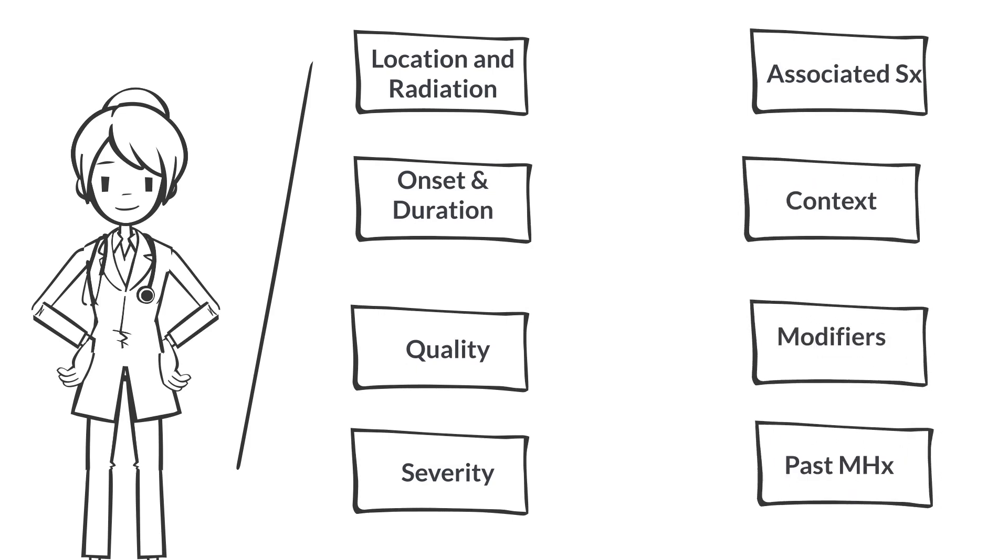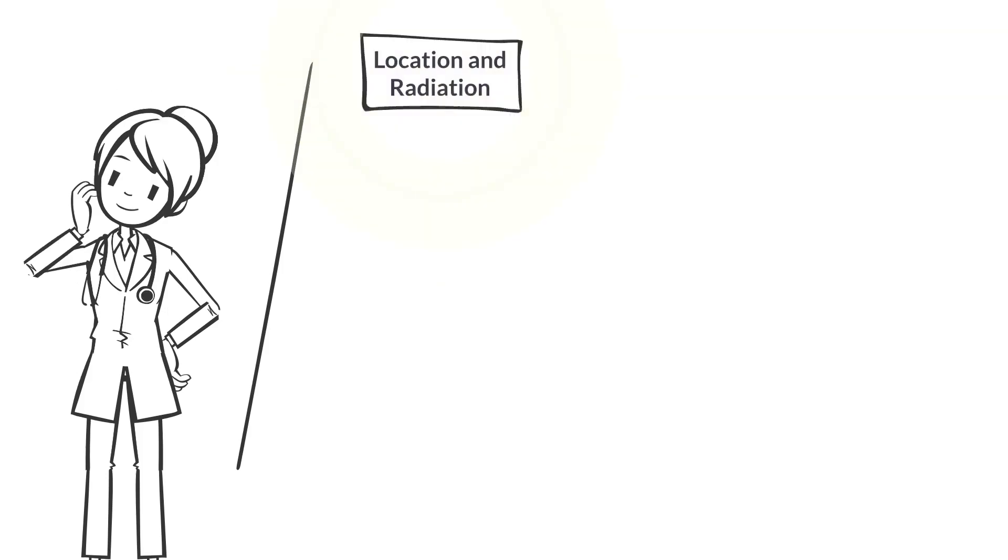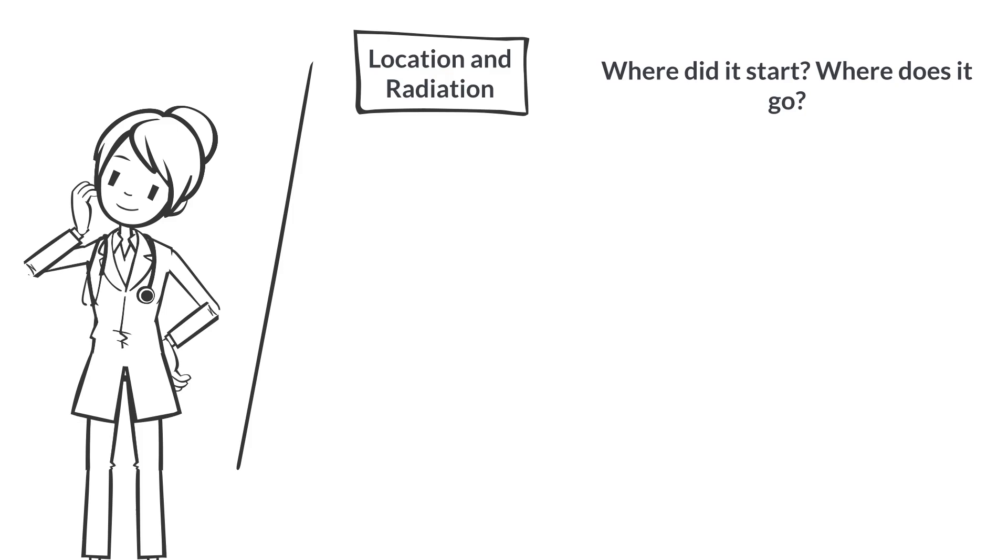The following are a few of the key elements to pay attention to during the initial encounter. Record the HPI elements using the patient's own words when appropriate. Location and radiation: Where it started and where it is now. Often the patient will point or indicate with their hand. Does it radiate to the arm, shoulder, neck, back, or jaw? Onset, timing, and duration: The date and time the pain started, how long the pain lasted, and whether the onset was sudden or gradual.